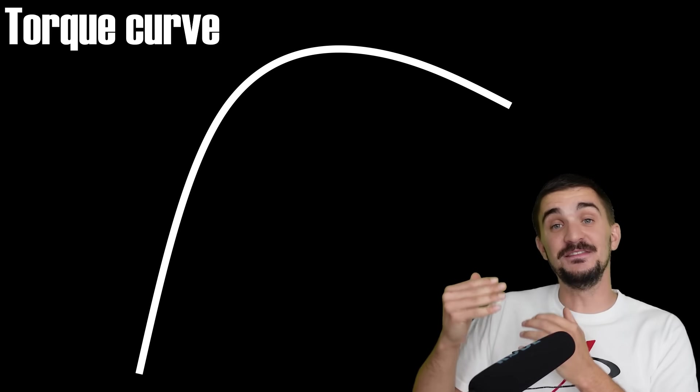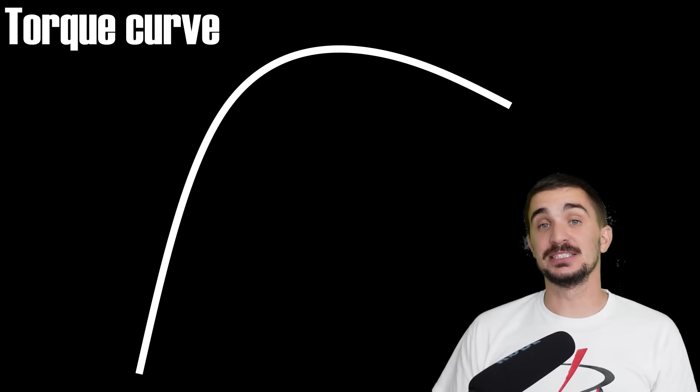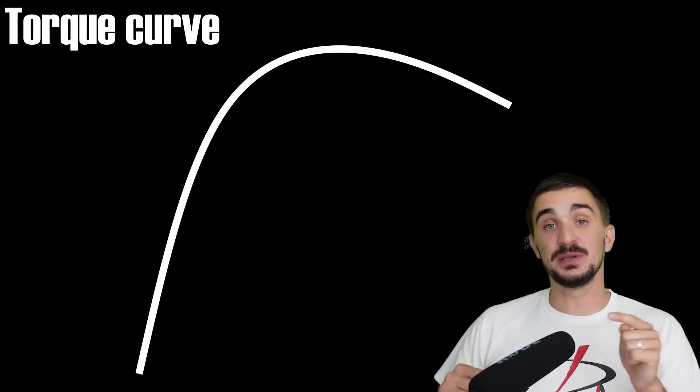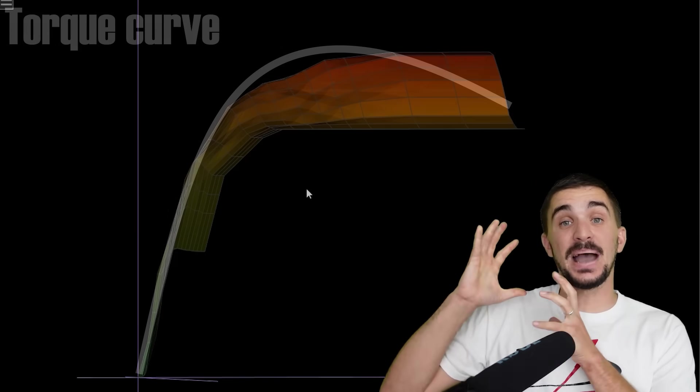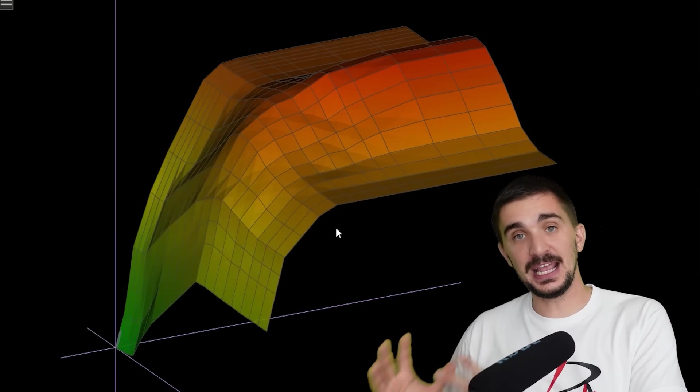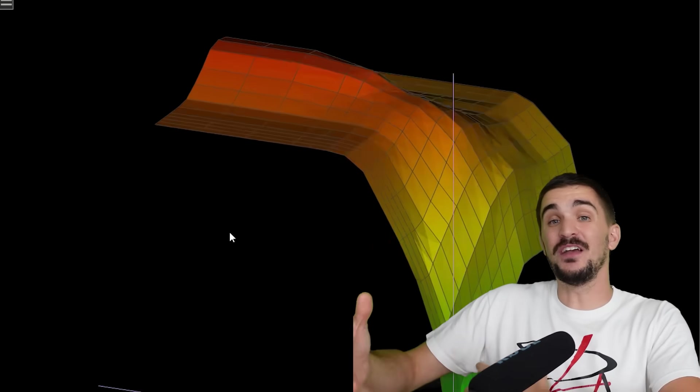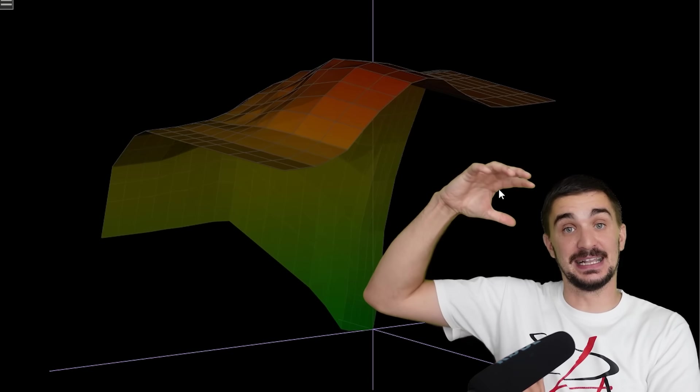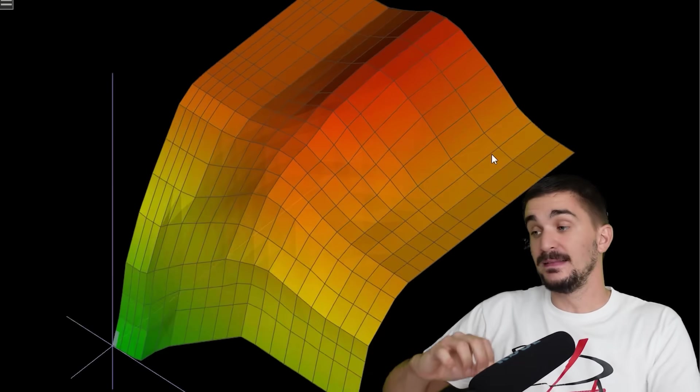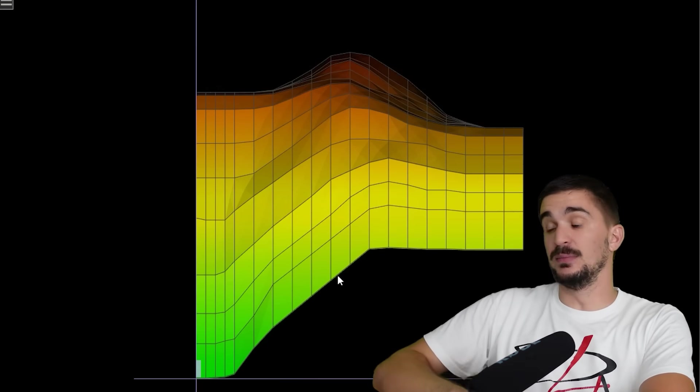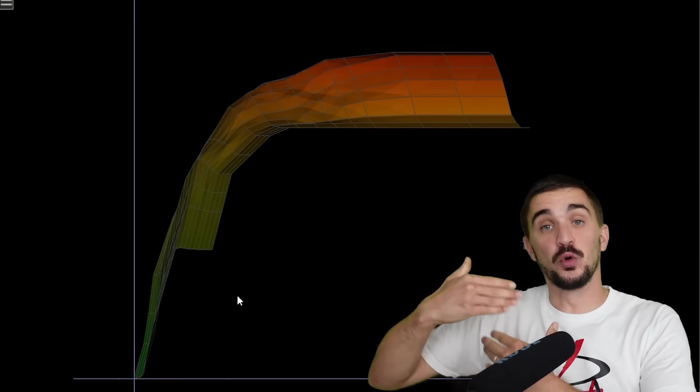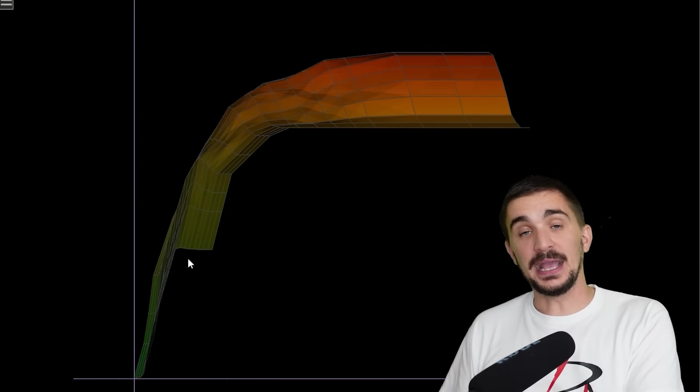And this is again why a VE map captures the essence of engine operation. And that is because the VE map matches the torque curve of the engine. The more efficient the engine is at breathing, the more efficient it is at filling its entire internal volume, the more air there is in the engine, the more fuel we can add, the more powerful the combustion and the more torque and power we can make.